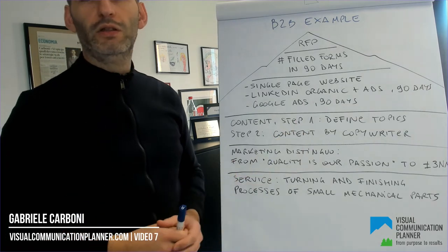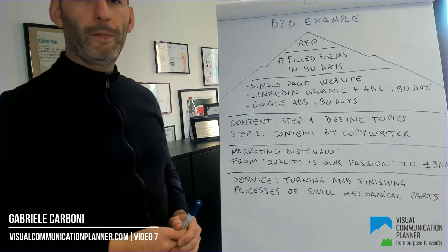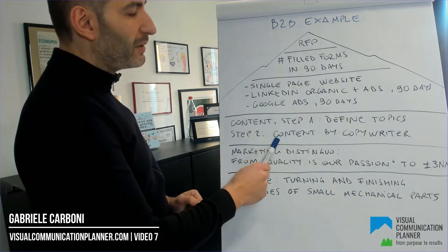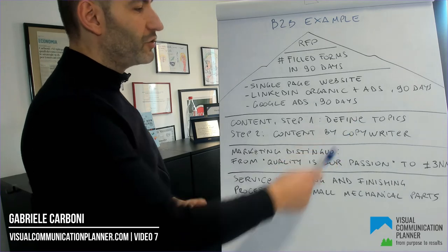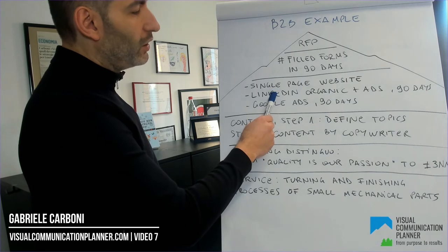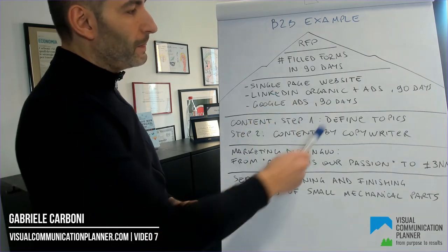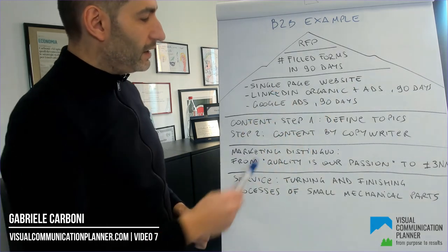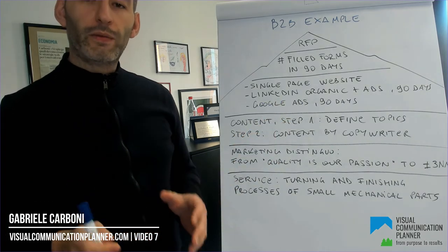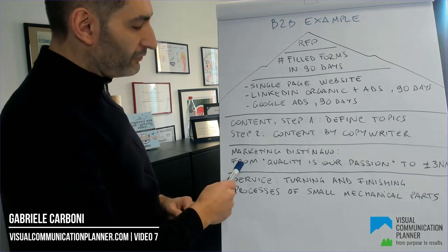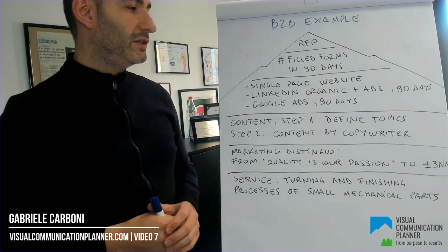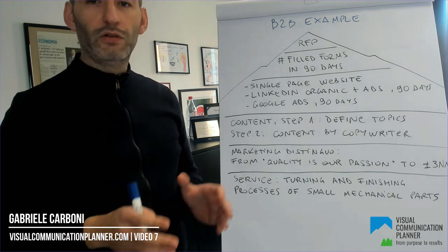Both channels with a budget of 10 euros per day. For content, step one was to define topics. Step two, we prepared the content with a native-speaking German copywriter for the landing page, the single page website, the organic post on LinkedIn, the ads on LinkedIn, and also the text and responsive ads for Google Ads. We also went through our marketing distinguo, from the old claim of 'quality is our passion' to a very clear marketing distinguo of plus or minus 3 nanometers.